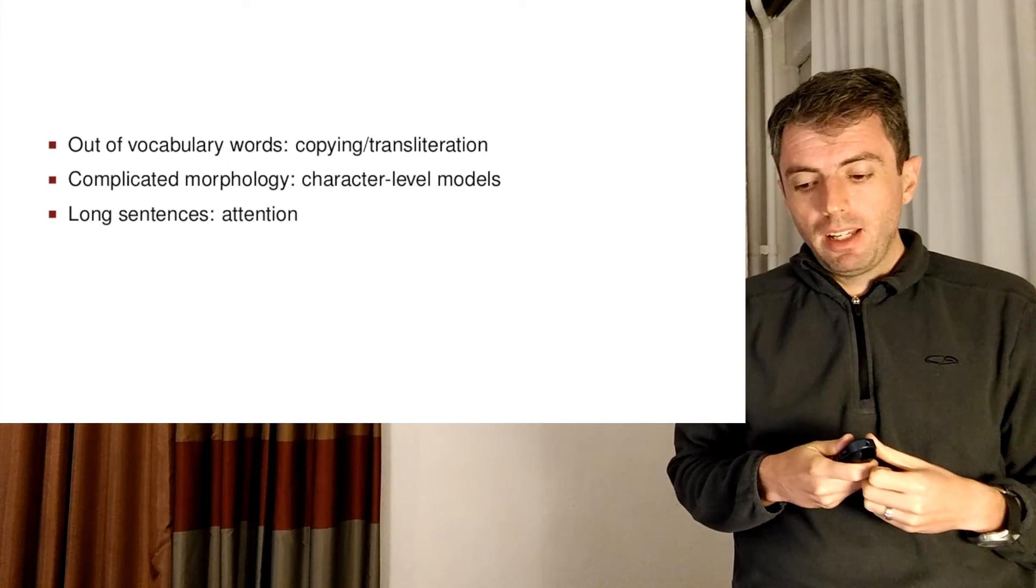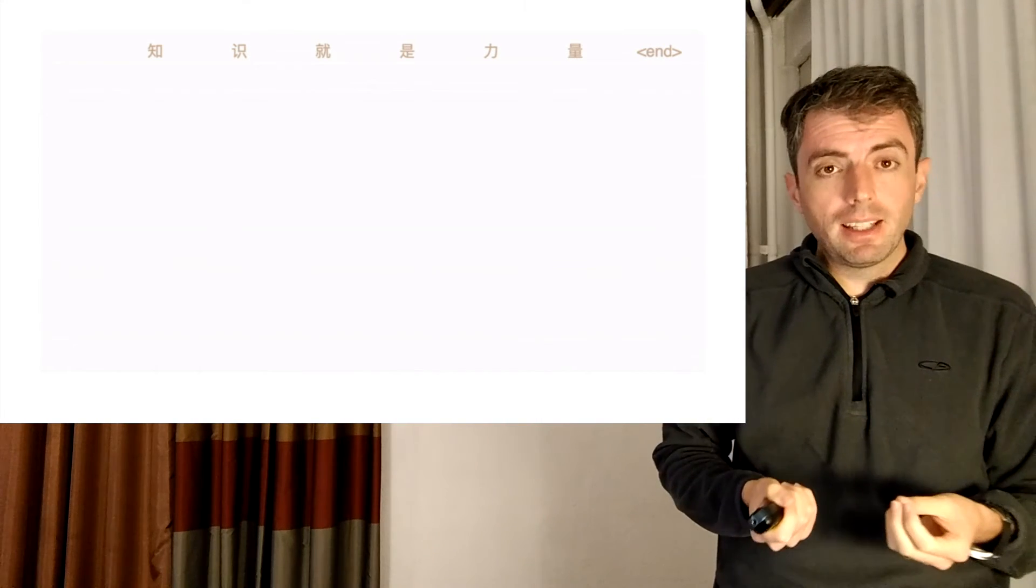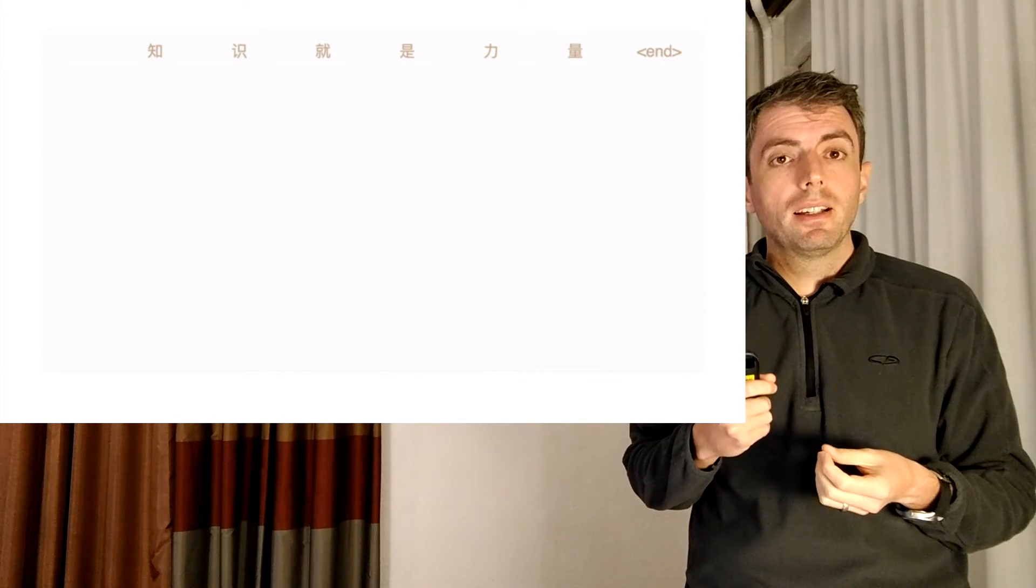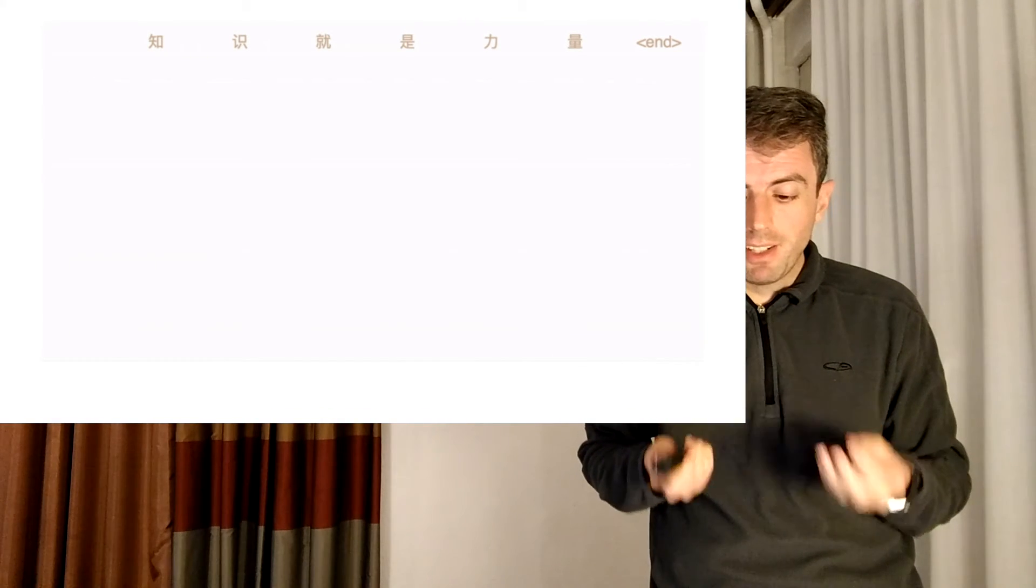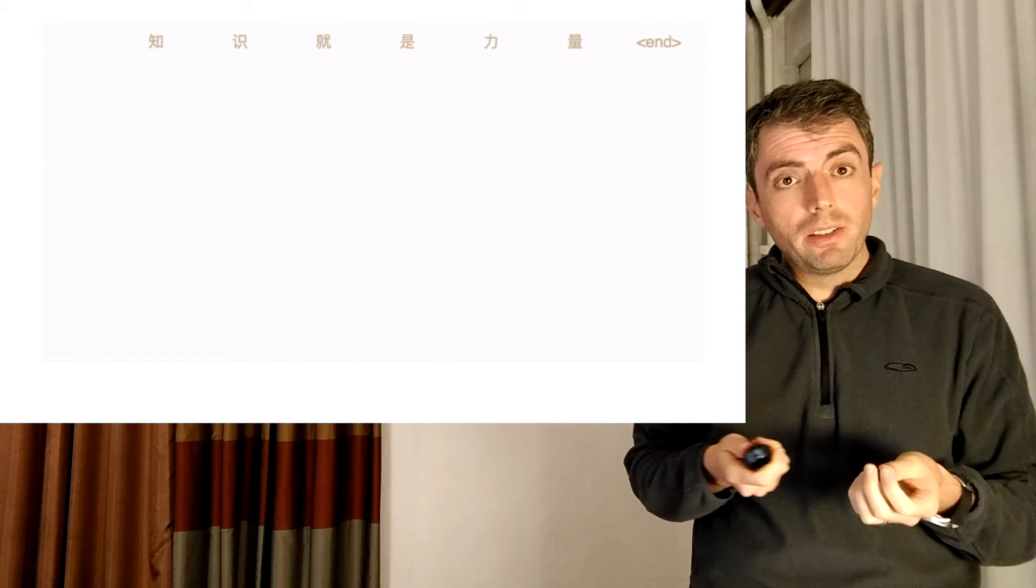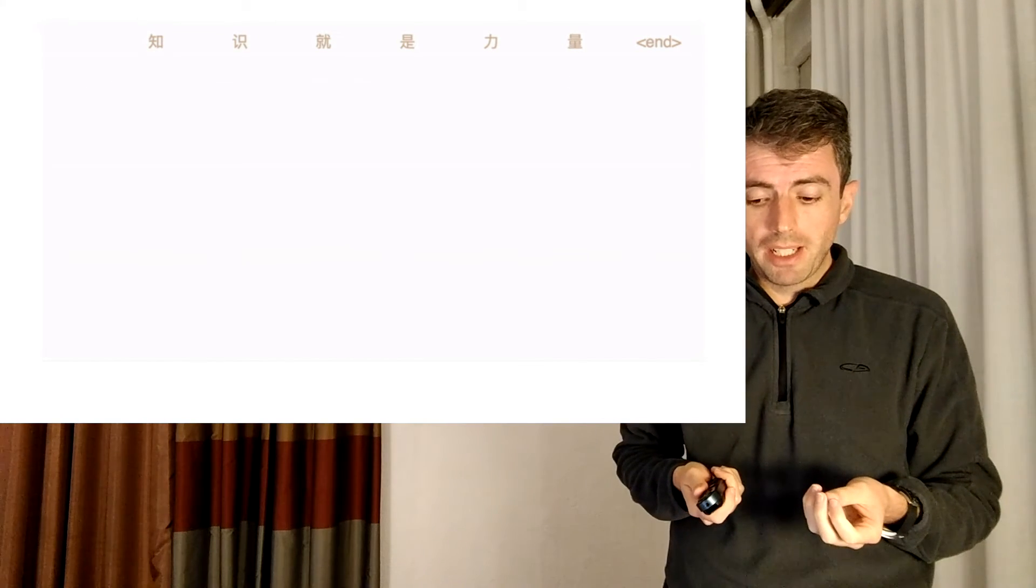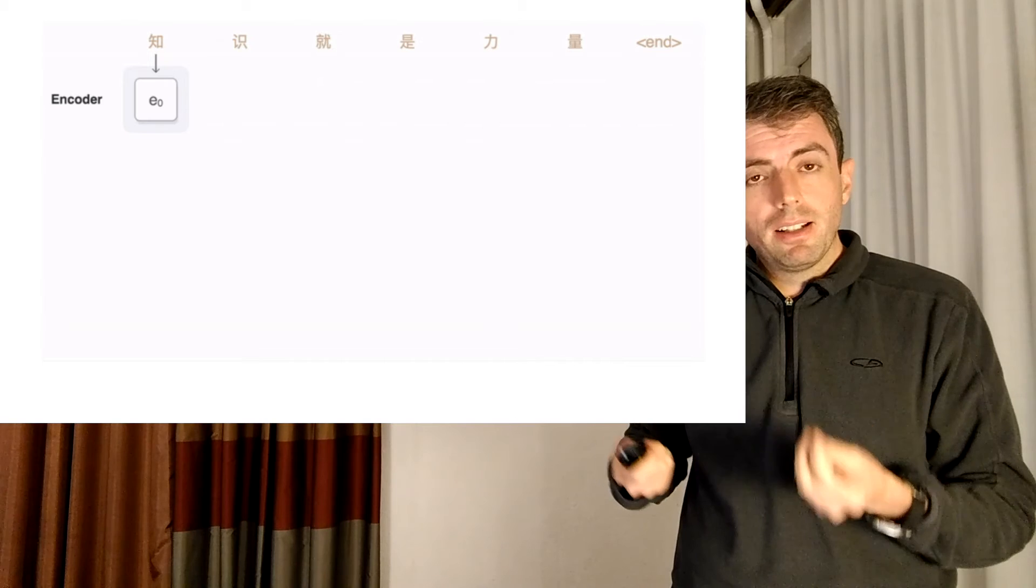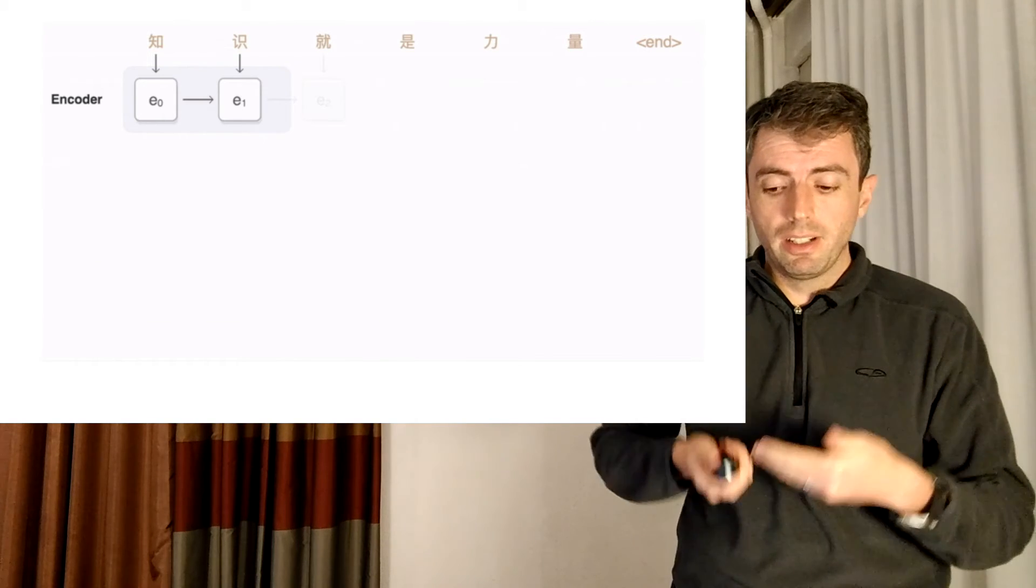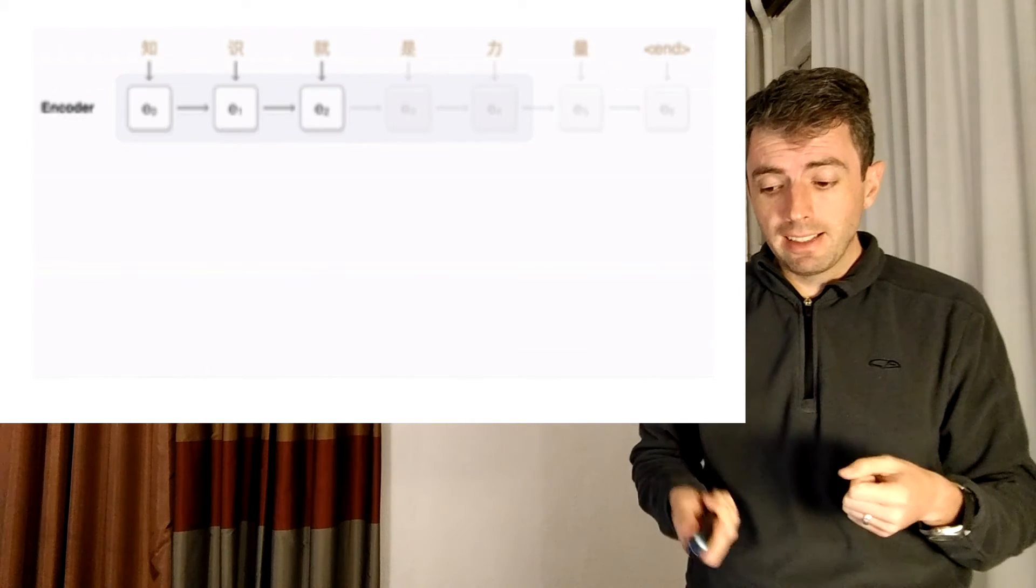So attention is a popular mechanism in deep learning to figure out what areas of the input are important for our output. So let's see an example of this translating from Chinese to English. Now, let's say that we have a sentence like, 知识, 知识, 知识, 理量. This roughly means knowledge is power. And if we want to translate this into English, we're going to do something very similar on the encoder. Each of the Chinese characters has a corresponding hidden state. And we pass through the sentence until we have generated all of the hidden states for each character of the source sentence. Feed into it. This is exactly like we had before.